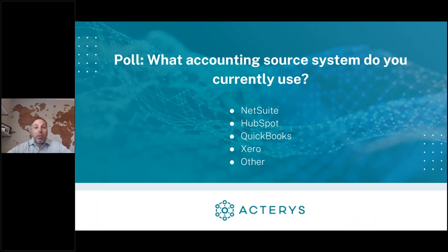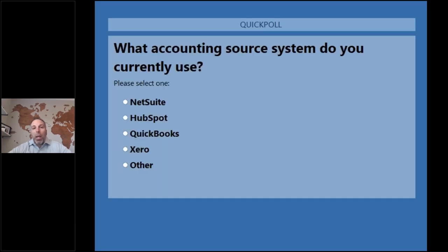We have the last polling question of the day, and this is to itemize what type of systems you're working with within your organization, specifically related to accounting systems. This is going to play a big role in what we're going to talk about in the live demonstration. I'm actually going to demonstrate a template we created for QuickBooks specifically, but we also have them for HubSpot, NetSuite, Xero, Business Central, Stripe, and others. So we'll give everyone a few minutes here to answer what type of accounting systems they're working with.